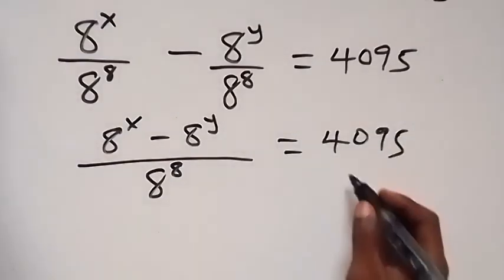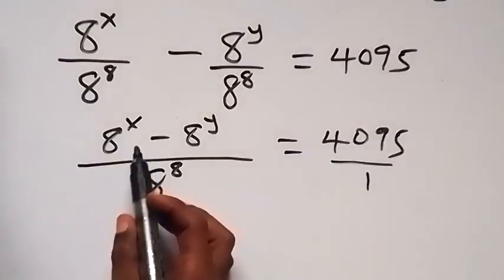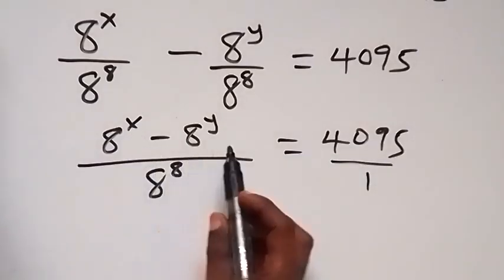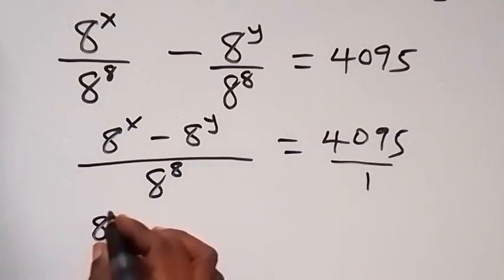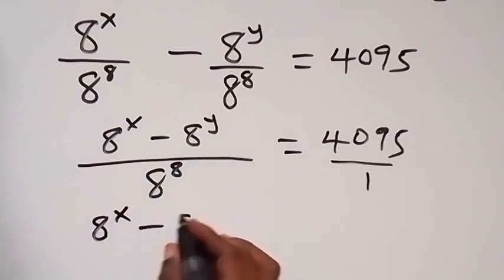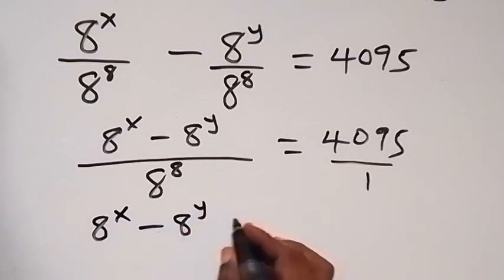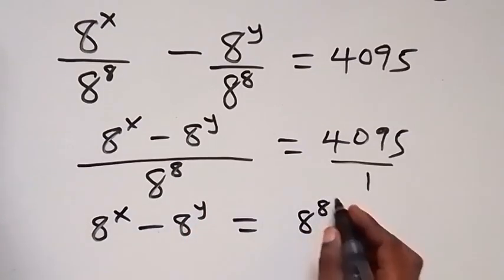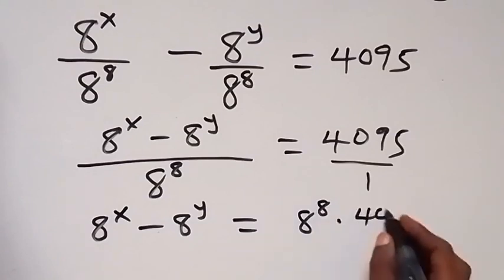In the next step, we can cross-multiply. So 8 raised to power x minus 8 raised to power y, multiplied by 1, gives us 8 raised to power x minus 8 raised to power y, which is equal to 8 raised to power 8 multiplied by 4095.